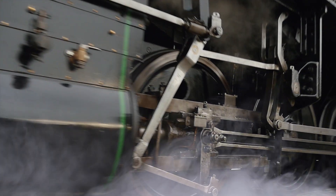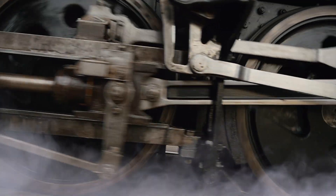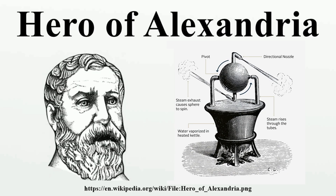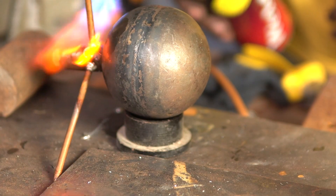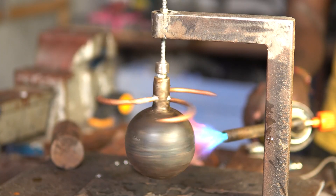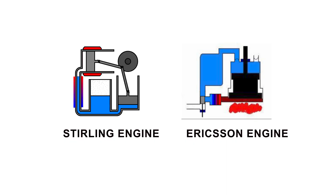Let us circle back to the external combustion engine. We saw how water could be converted into steam to run an engine. Contrary to the popular belief that steam engines are a modern invention, Hero of Alexandria invented a steam-powered gadget known as the Aeolipile 2000 years ago — I have made a working model of this device in a separate video, check it out if you are interested. Instead of water, can we just use the expansion and contraction of air in an external combustion engine? Yes, we can. The Ericsson engine and Stirling engine work on these principles.